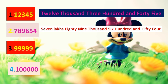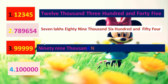See the third one: ones, tens, hundreds, thousands, ten thousands. The number name is ninety-nine thousand, nine hundred and ninety-nine.